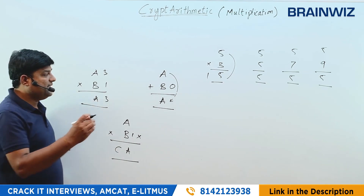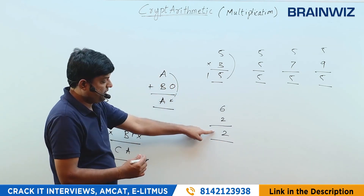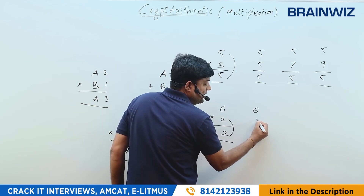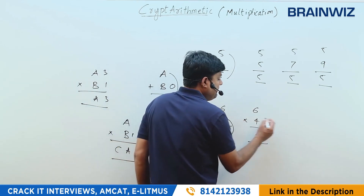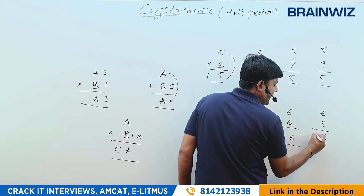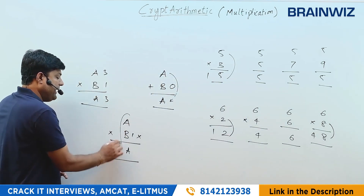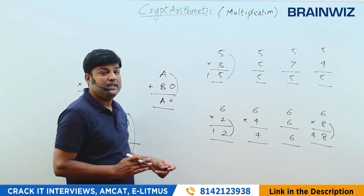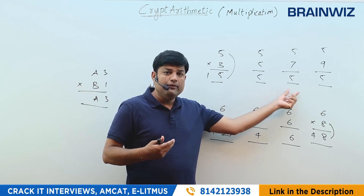Another pattern: 6×2=12 — you get 2 back. If you want the same number 6 back, multiply 6 with an even number. 6×4=24 gives 4 back, 6×6=36 gives 6 back, 6×8=48 gives 8 back. So whenever you have the same number back in the units place, remember these kinds of operations. These are the basic rules for multiplications.